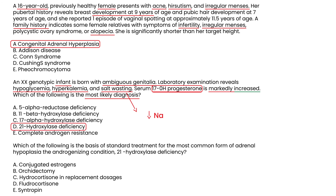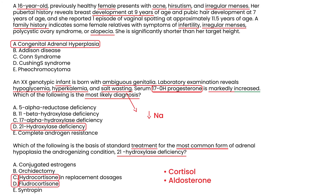Vignette 3: Which of the following is the basis of standard treatment for the most common form of adrenal hyperplasia — the androgenizing condition, 21-hydroxylase deficiency? Since cortisol and aldosterone are deficient, you must replace them. You replace cortisol with hydrocortisone, and you replace aldosterone with the mineralocorticoid fludrocortisone. In this question, both choices are correct.